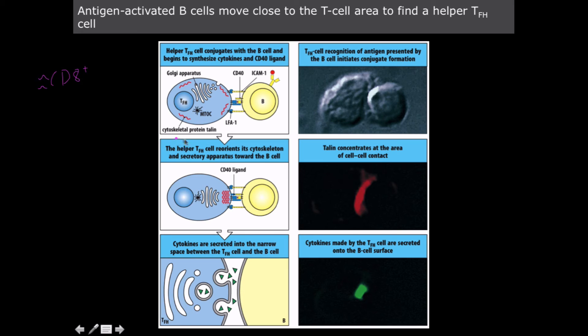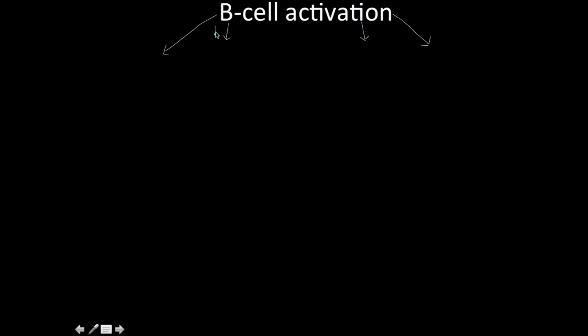One of the ways this was discovered was by staining of the cytoskeleton protein known as talin. Just like with CD8 cytotoxic T-cells, all helper T-cells do the same thing — once activated, they immediately start synthesizing the cytokines they need and orchestrate everything, moving the microtubule organizing center, Golgi apparatus, endoplasmic reticulum, and secretory vesicles into appropriate proximity to deliver their payload accurately and effectively one cell at a time.